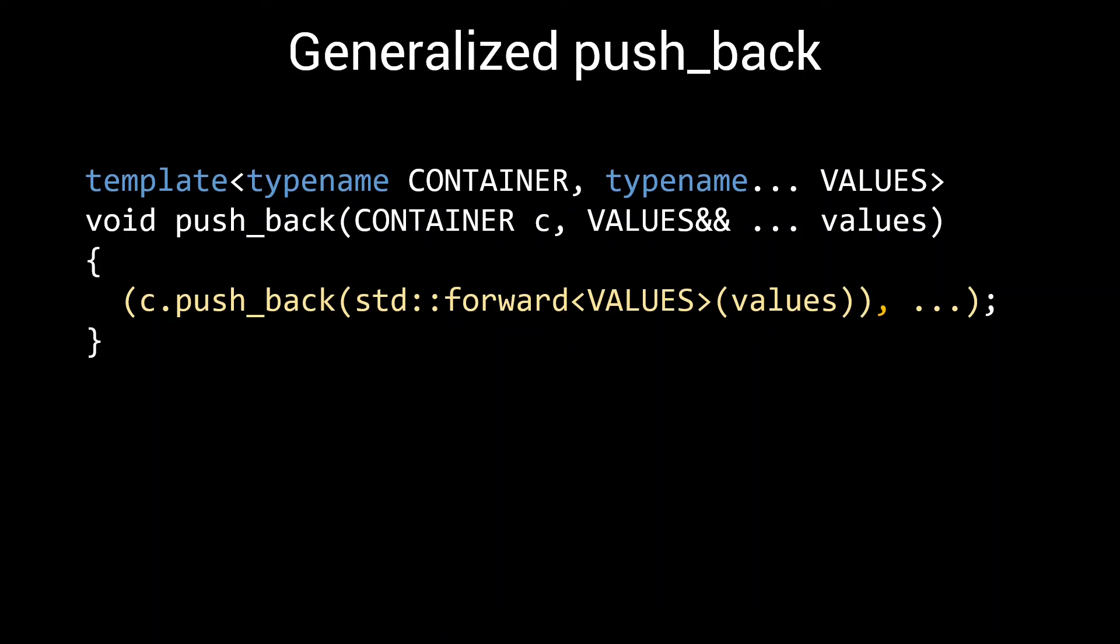This pushback function accepts an arbitrary container and several values to push into it. A fold over the comma operator is used to repeat the pushback operation for each of the values in the parameter pack. You could for example use it with a vector of int as a container, and push back the numbers 1, 2, and 3 in one go.